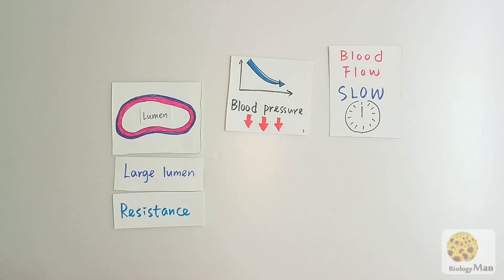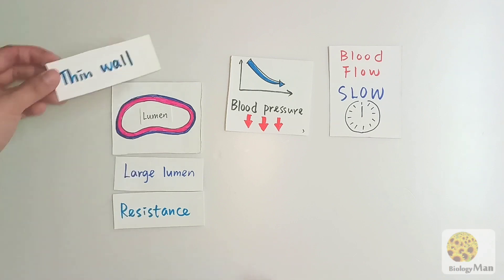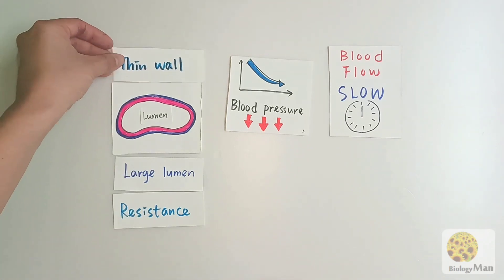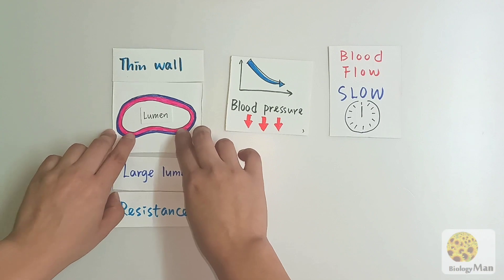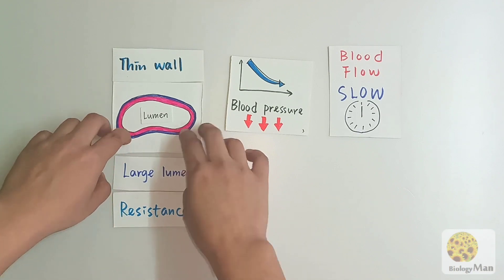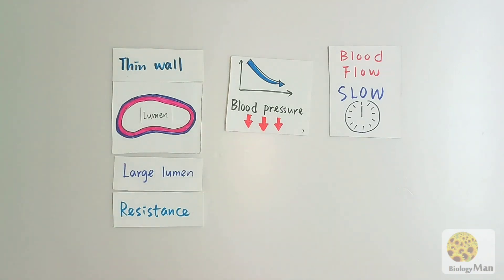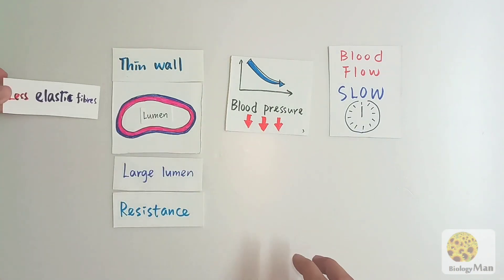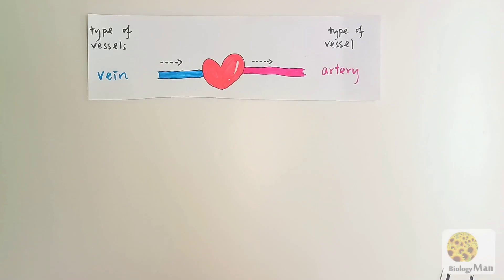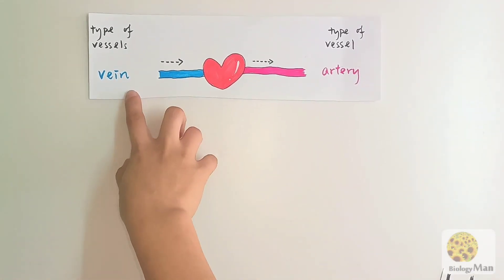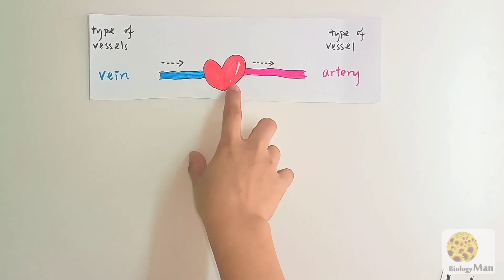Moreover, compared to arteries, the wall of the vein is thinner and it has less elastic fiber. Let's summarize what we have learned: veins are the vessels that send blood back to the heart, with low blood pressure and slow blood flow velocity.